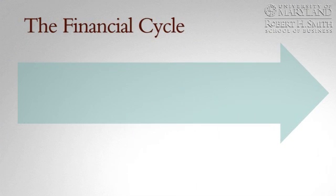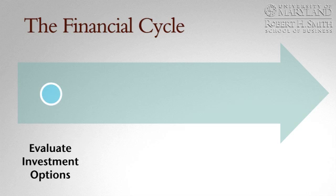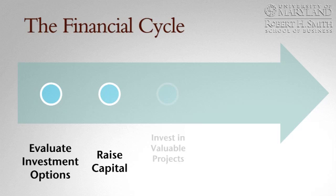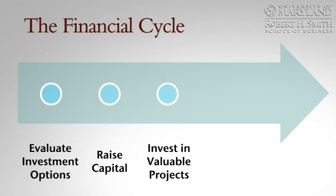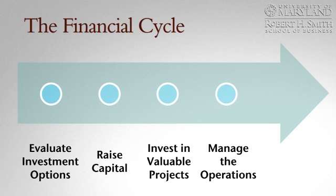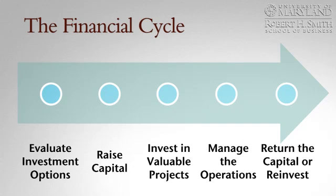Before we proceed, let's talk about the sequence of events that takes place when firms make an investment. After they first identify the potential investment opportunities, they next need to raise capital. After raising capital, they make the investment into the project. The fourth step is to then manage the process of the project, manage the operations, and then finally the cash flows are realized. The challenge is that there's a significant amount of time that elapses between when the capital is raised and when the proceeds are returned to the investors.